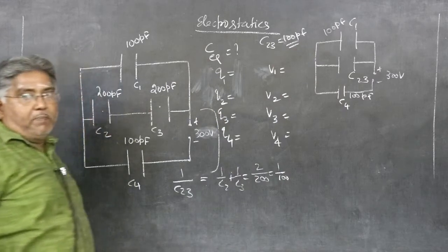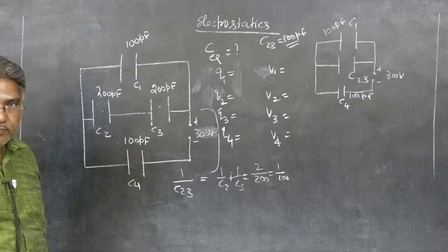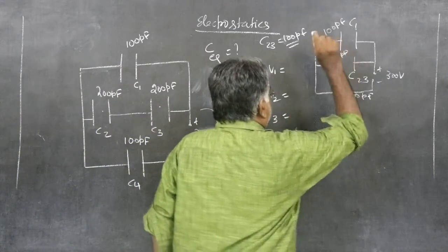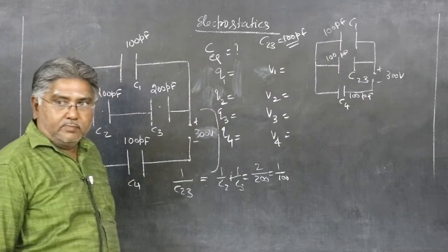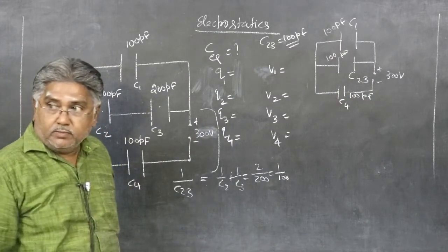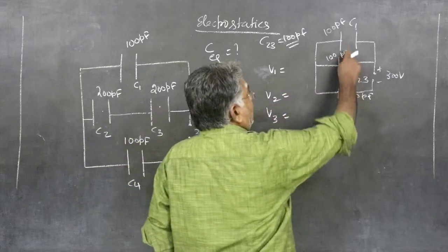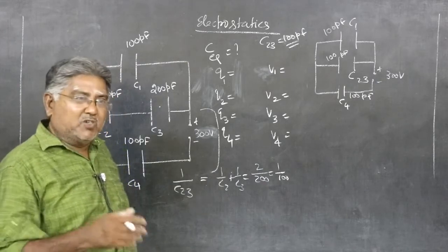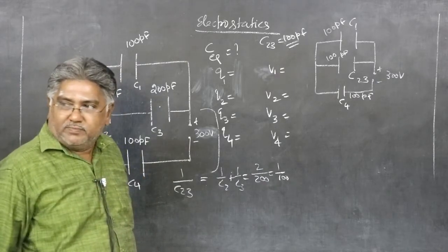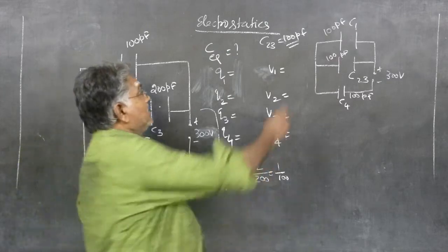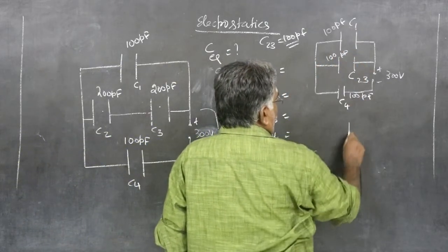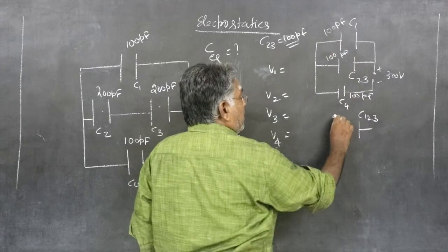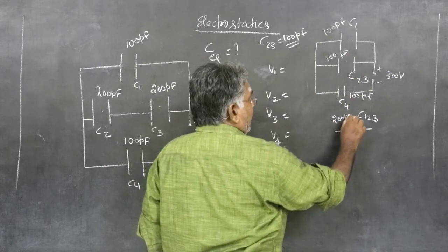Now C1 and C23 are in parallel. For parallel combination, you simply add: C123 = C1 + C23 = 100 + 100 = 200 pF. The series combination uses the 1/C formula, but parallel is simply add. So these two are replaced by C123 = 200 pF. C4 remains 100 pF and the supply is 300 volt.